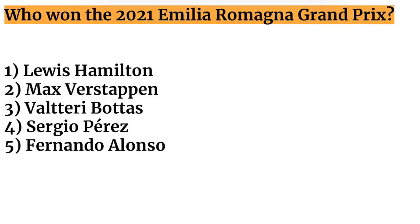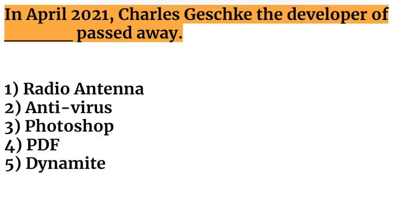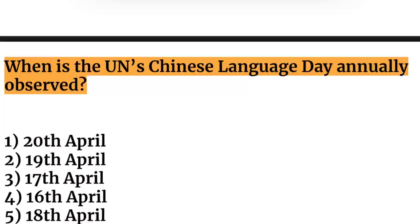Next question: who won the 2021 Emilia Romagna Grand Prix? It was won by Max Verstappen. Also, in April 2021, Charles Geschke, the developer of PDF — Portable Document Format — passed away.